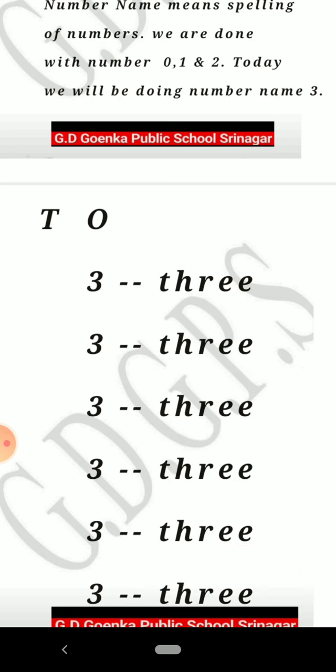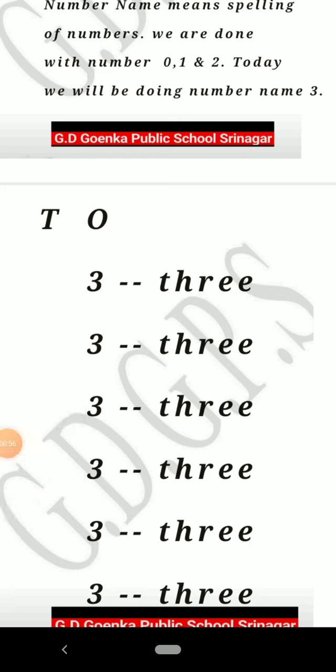You know now how you have to write it in your notebook, because you have already done 3 numbers. You have to write the number under 1's column, and next to it you have to write the spelling of the number.